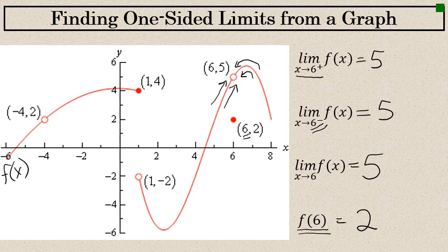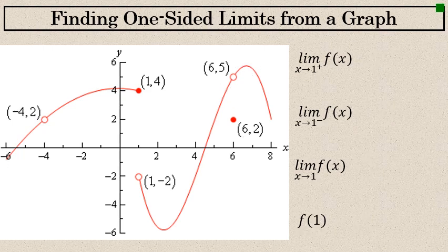Let's now take a look at some limits as x approaches 1. The limit as x approaches 1 from the right — from the right side, this graph is approaching a point that would have a y value of negative 2. When evaluating the limit as x approaches 1 from the right, I'm not concerned with what's happening to the left of x equals 1. I'm only concerned with where the graph is approaching from the right, and from the right it's approaching a point with a y value of negative 2.